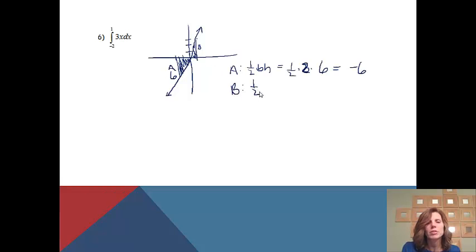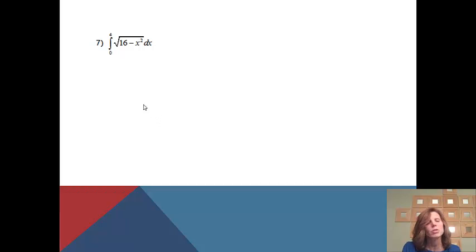And then for B, it's just going to be 1 half base times height. So it's 1 half. The base of this triangle is 1. The height, if I plug 1 in here, I will get a y value of 3. So 1 half times 1 times 3 will give me 1.5. If I add those two together, I will get negative 4.5. Notice that should make sense, because there is a bigger area underneath the x-axis than above. So that's why my answer will turn out to be negative.